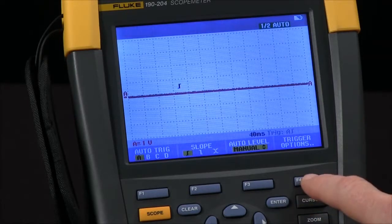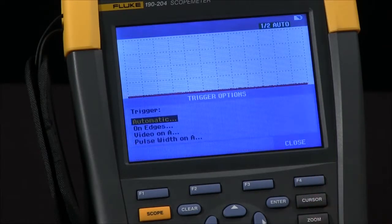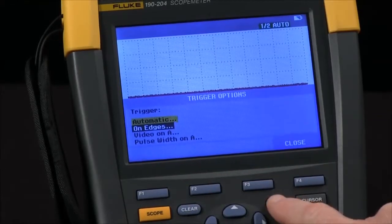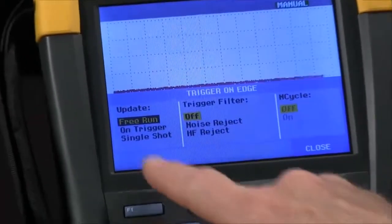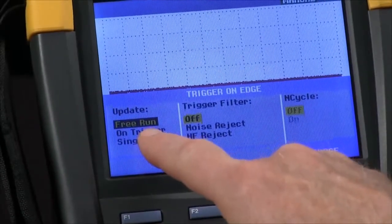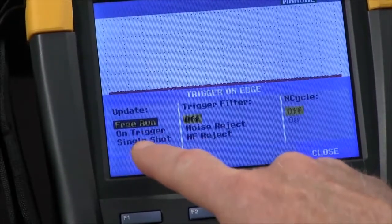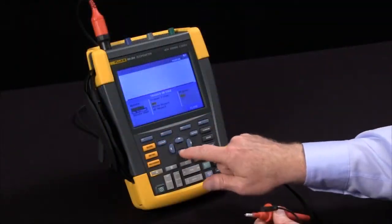I'll come to trigger options with the F4 key and select edge trigger. Use the enter key. I want to change from free run which lets the scope run all the time to on trigger where it waits for a trigger event.